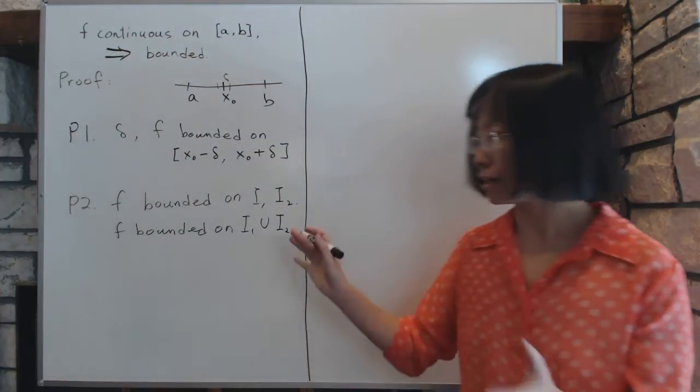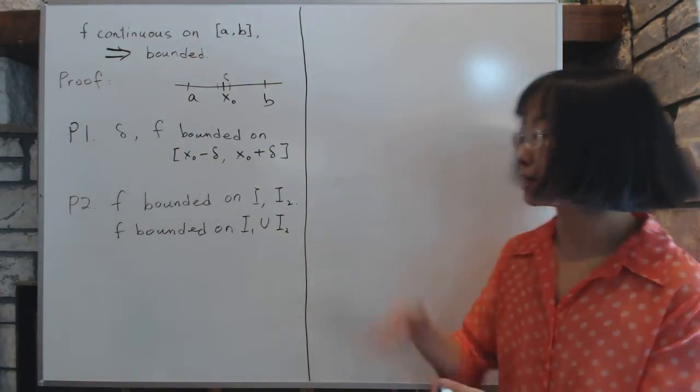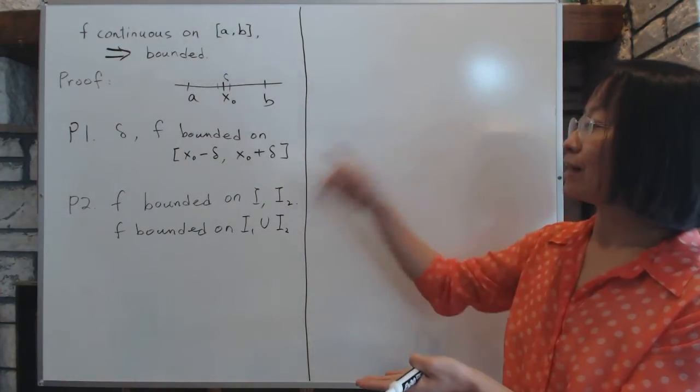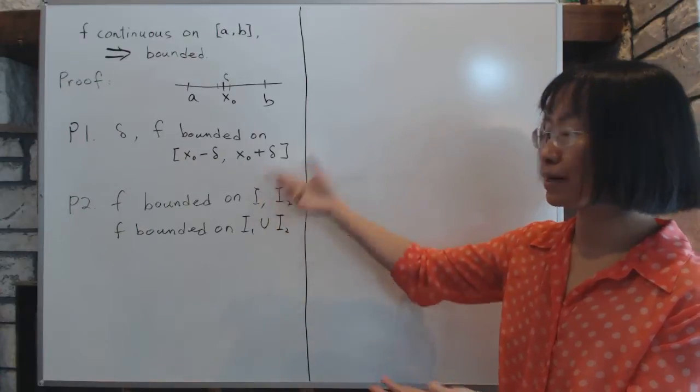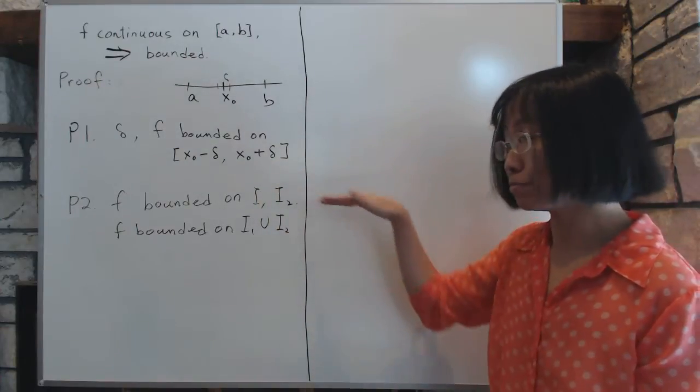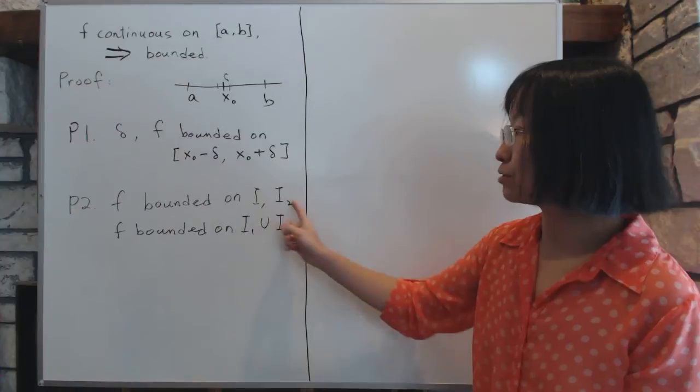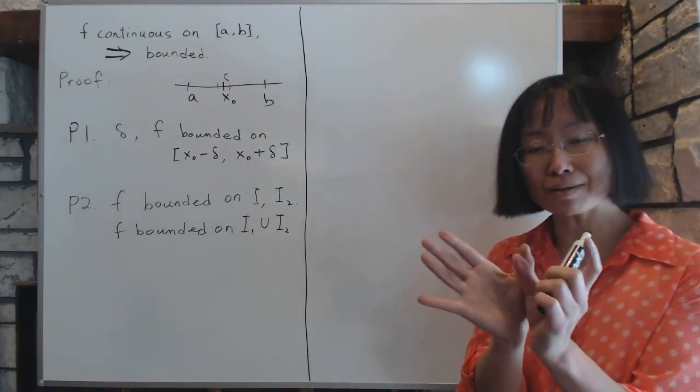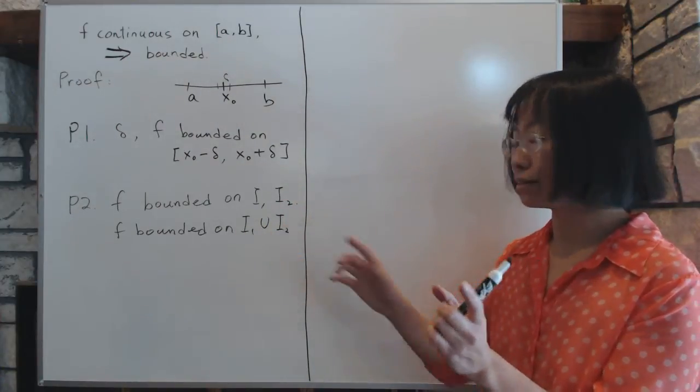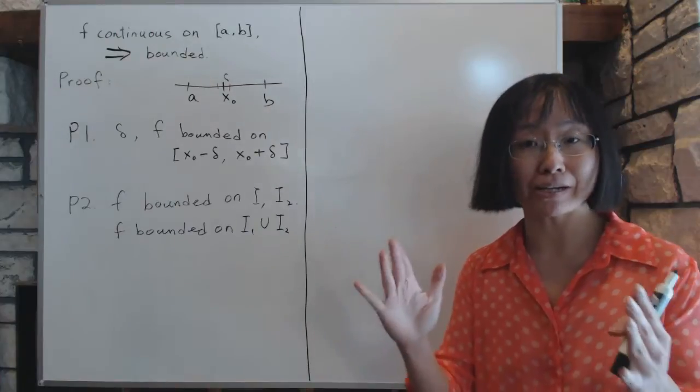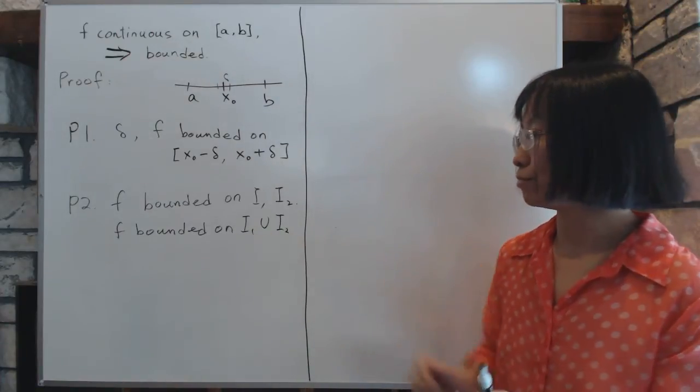And that's fairly intuitive because if you have a bound on here and here, you just pick whatever is the bigger number to bound them both. And if these two intervals happen to be connecting somehow, then i1 union i2 will be just one bigger interval where f will also be bounded.